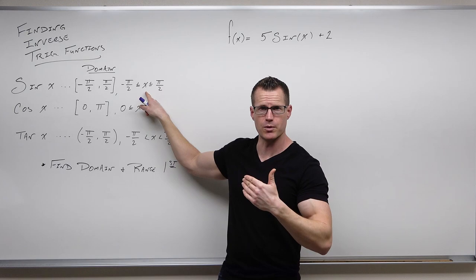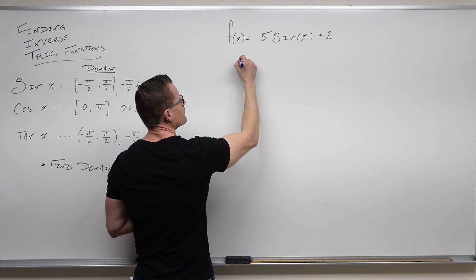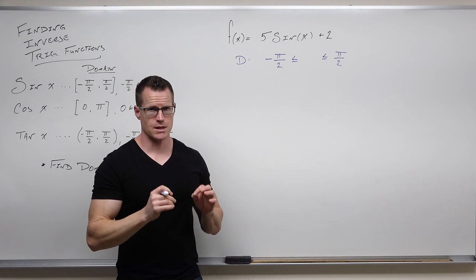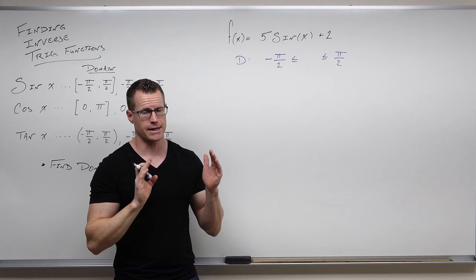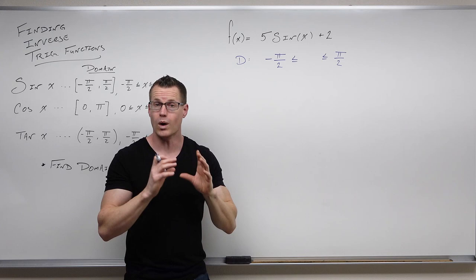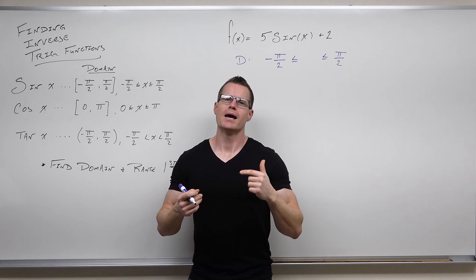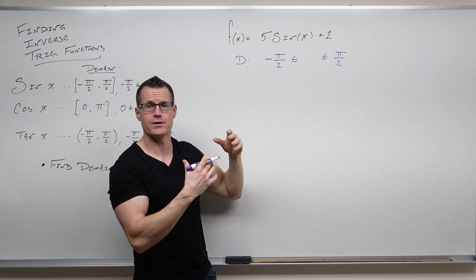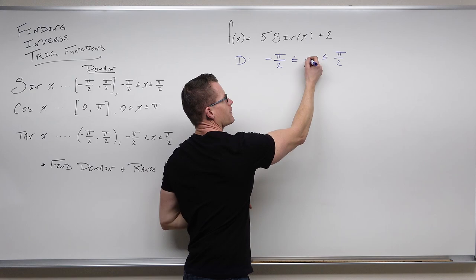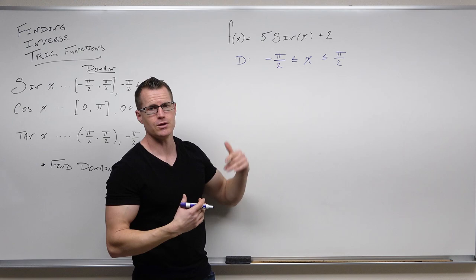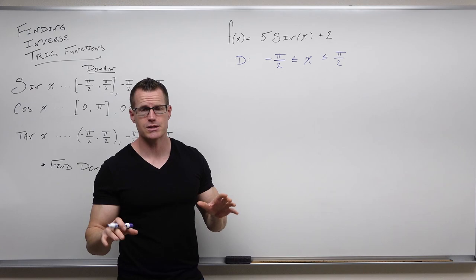We're going to take whatever's here and put it in between the appropriate values for that function. In this case it's just x, so our domain — because we're dealing with sine and we can only find the inverse of sine where we have a one-to-one function — is negative π/2 to π/2. Whatever's inside, whether it's x plus 5, x minus 1, 3x plus 2, goes in between the bounds for the appropriate function. That's the easiest way to find domain using inequality notation, because you can actually do math on it.